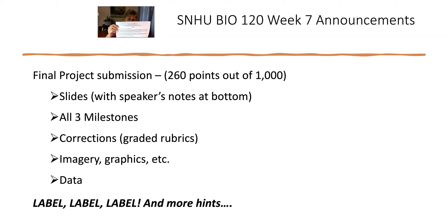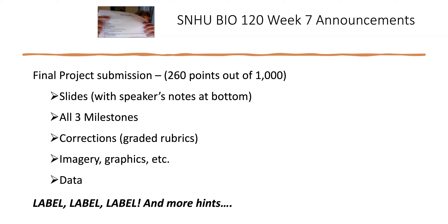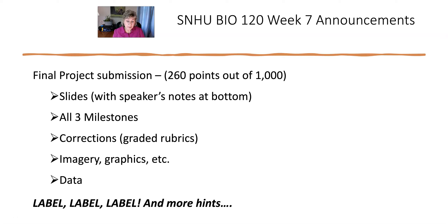So here's the rubric for the final project. There are all these sections, and the rubric is set up exactly like the sections. So I am looking for the introduction, I am looking for the 'where,' the 'who,' the 'how.' I'm looking for education and why that's so important. I'm looking for the analysis of the biological concepts that are going to relate to your topic. So I'm looking for those sections, and that's why you need to label them.